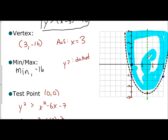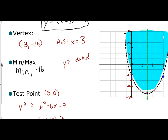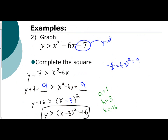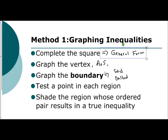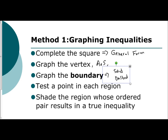To recap: completing the square to get into general form is not new — we've done this before. The only new parts are using a solid or dashed curve and picking a test point to shade, which we've done with linear inequalities. The steps for solving a quadratic inequality by graphing are: complete the square to get general form, find the vertex and axis of symmetry, graph the boundary as a solid or dashed curve, and take a test point to determine where to shade.